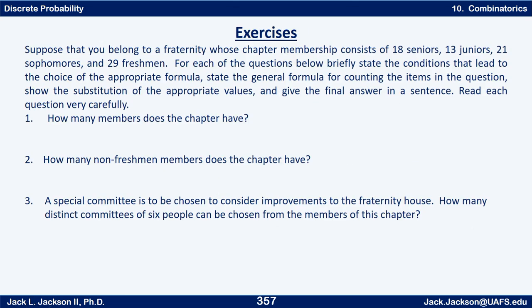Suppose you belong to a fraternity whose chapter membership consists of 18 seniors, 13 juniors, 21 sophomores, and 29 freshmen. For each of the questions below, briefly state the conditions that lead to the choice of the appropriate formula, state the general formula for counting the items in the question, show the substitution of appropriate values, and give the final answer in a sentence. It's totally appropriate to use your calculator to do the actual computation. Now read each question carefully. Question number one is how many members does the chapter have? Number two, how many non-freshman members does the chapter have? Number three, a special committee is to be chosen to consider improvements to the fraternity house. How many distinct committees of six people can be chosen from the members of the chapter? When you think you have this one worked out, come back. Press pause now.